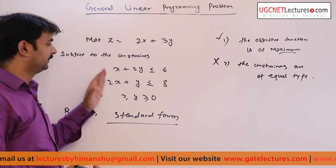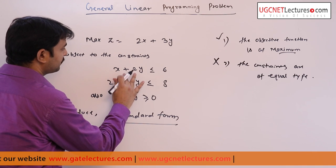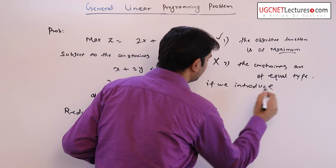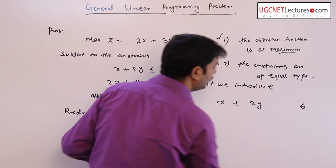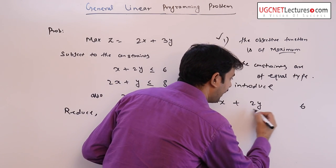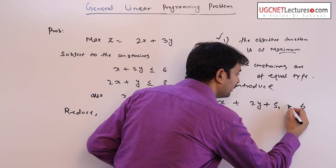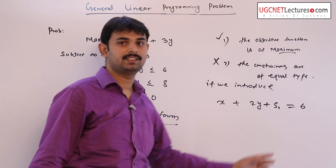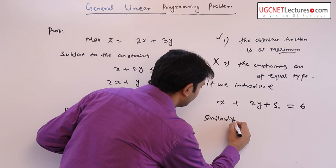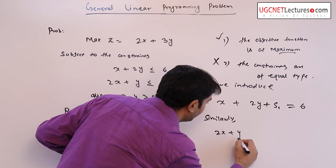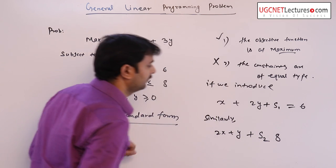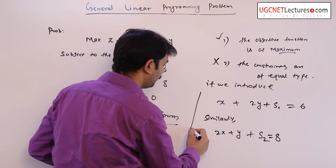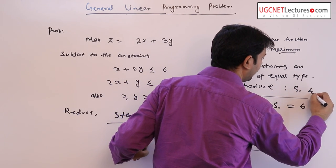So how do we reduce this to standard form? We have x plus 2y less than or equal to 6. This means if we introduce a real number s1 on the left-hand side, this equation is rewritten as x plus 2y plus s1 equal to 6. Similarly, 2x plus y plus s2 — now this equation is of equality type. So we introduce s1 and s2 to convert the inequalities to equalities.